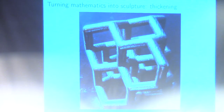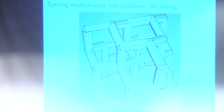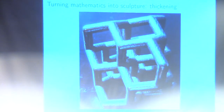Whenever I give this talk, I'm always curious to see if people know what this structure is. This is less commonly known to mathematicians, but maybe more commonly known to chemists. It's actually the molecular structure of diamond — you've got your four carbon atoms and they have their connections out to their four neighbors.